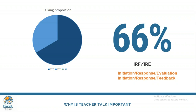So there are two turns for the teacher and one turn for the student. That's why 66% is mostly for teacher talk and 33% is for student talk. I don't mean the teacher should speak for 66% of the classroom time — I'm dealing with the proportions of the turns. So I should initiate the class, get the response from my learners, and then evaluate it by providing feedback.